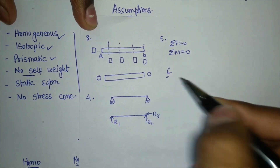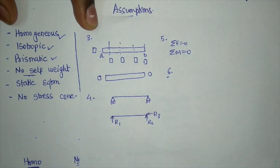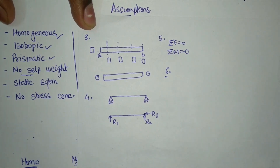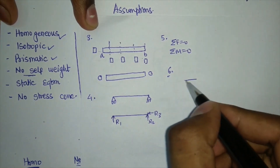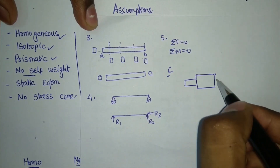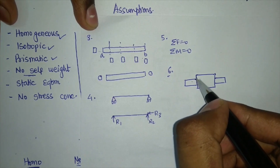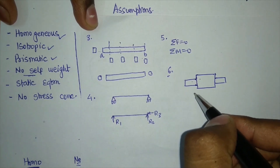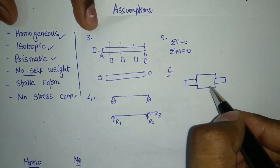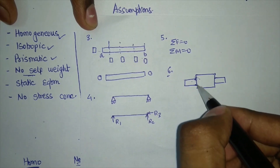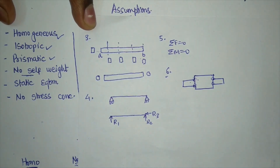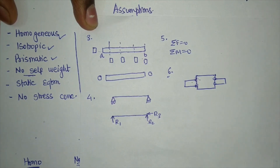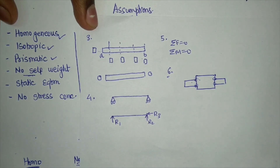The sixth property is that there is no stress concentration. This concept will be discussed in detail in the machine design course. For now, if the cross-sectional area of a shaft changes suddenly at notches, stress gets concentrated there — but in solid mechanics analysis, we neglect that stress concentration at all such notches. In our next part, we will discuss the types of loads and their sign conventions. Thank you for watching.